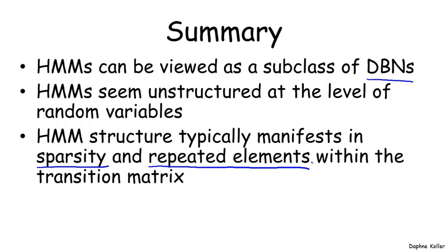And also in terms of repeated elements. As we saw in the previous slide, the phone model can occur in multiple words, and we replicate that structure across the different places where the same phone can be used in the language. And so that gives a lot of structure in the transition model that really doesn't manifest in any way at the level of random variables.